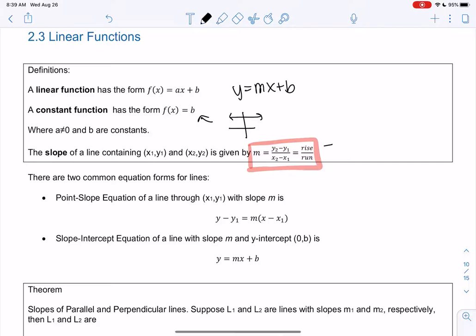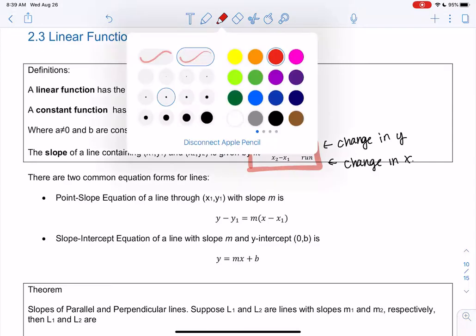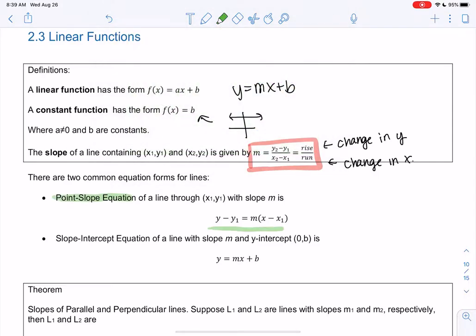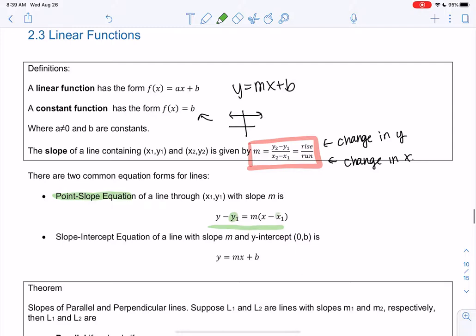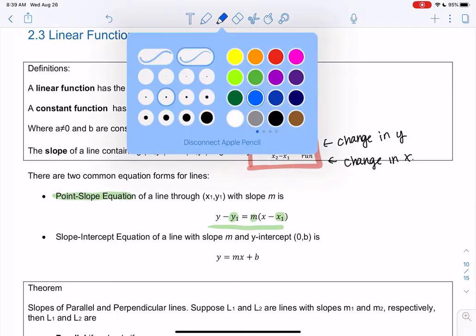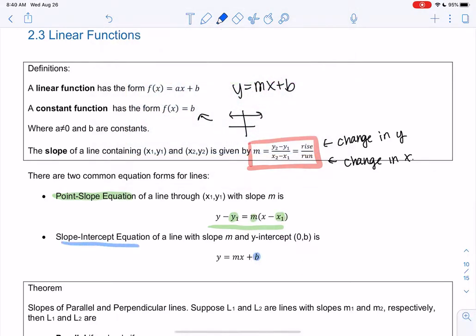So the rise is the change in the y, and the run is the change in the x. The two forms we've maybe seen before: point-slope is when you plug in a point and the slope. And then slope-intercept is where you specifically have the intercept and slope. So the intercept is the y-intercept. It has to be 0,b. So if I have 2,3, that's not the y-intercept. But 0,5 is the y-intercept.